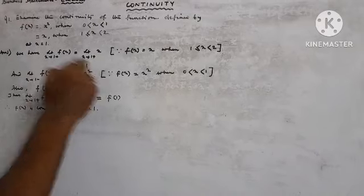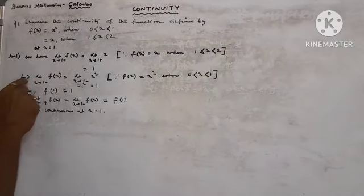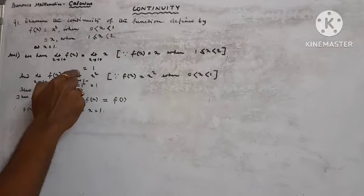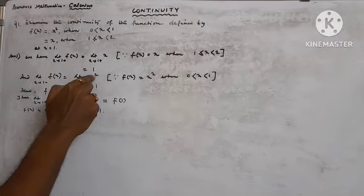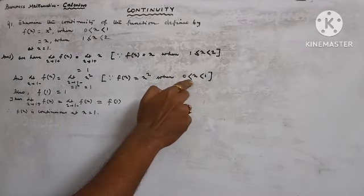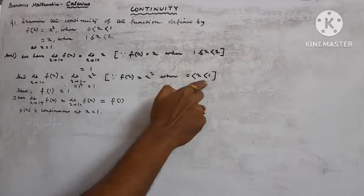This equals 1. And limit x tends to 1 minus f(x) equals limit x tends to 1 minus x², since f(x) = x² when 0 < x < 1.